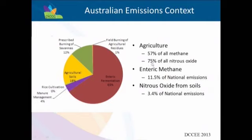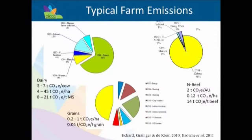Agriculture is the dominant source of nitrous oxide. Breaking down further across different production systems - dairy, beef, and grains - the difference between dairy and beef is largely the amount of nitrogen fertiliser used in dairy, which leads to more nitrous oxide. Grain systems have lower emissions per tonne or per hectare compared to livestock systems, largely because there's no enteric methane component. Looking at where the different sources come from, the largest number of animals is in the beef sector, so beef has the highest methane emissions, followed by sheep, then dairy.